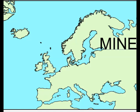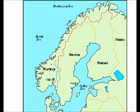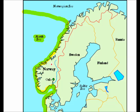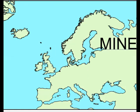The North Sea, which is the second biggest sea in Europe, is found between Great Britain and Europe. As you can see, it goes as far north as Norway, coming down towards the Netherlands and Belgium as well.